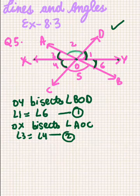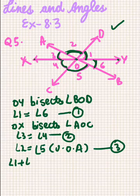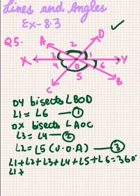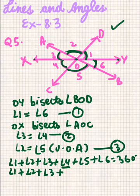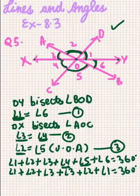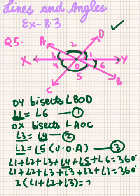We know that the sum of all these angles equals 360 degrees. So angle 1 plus angle 2 plus angle 3 plus angle 4 plus angle 5 plus angle 6 equals 360 degrees. Substituting the equal values — angle 4 equals angle 3, angle 5 equals angle 2, angle 6 equals angle 1 — we get 2 times (angle 1 plus angle 2 plus angle 3) equals 360 degrees.